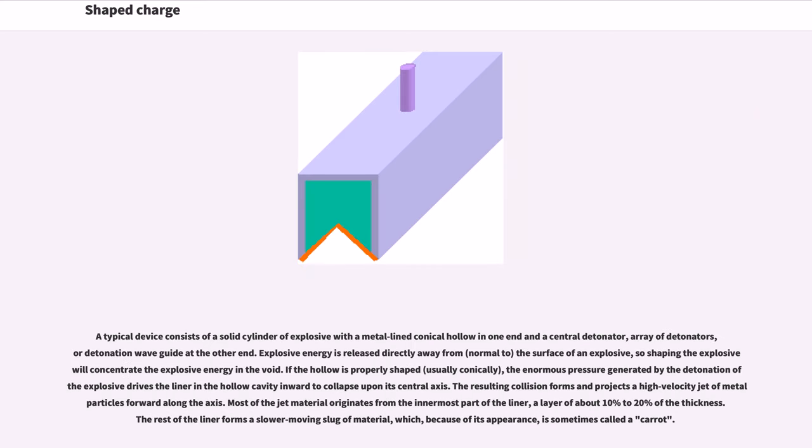A typical device consists of a solid cylinder of explosive with a metal-lined conical hollow in one end and a central detonator, array of detonators, or detonation waveguide at the other end. Explosive energy is released directly away from, normal to, the surface of an explosive, so shaping the explosive will concentrate the explosive energy in the void. If the hollow is properly shaped, usually conically, the enormous pressure generated by the detonation of explosive drives the liner in the hollow cavity inward to collapse upon its central axis. The resulting collision forms and projects a high-velocity jet of metal particles forward along the axis. Most of the jet material originates from the innermost part of the liner, a layer of about 10% to 20% of the thickness.